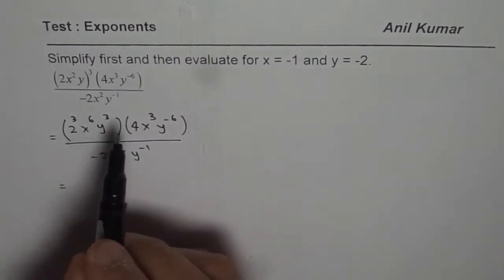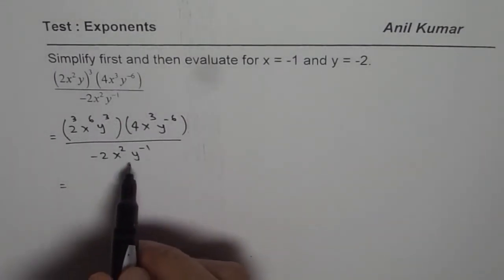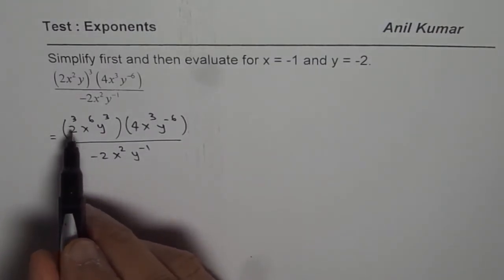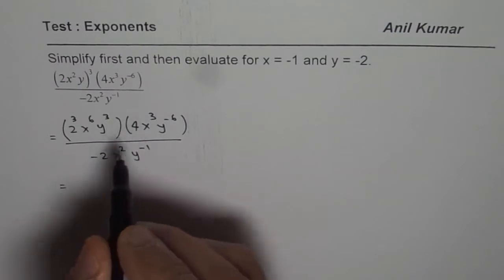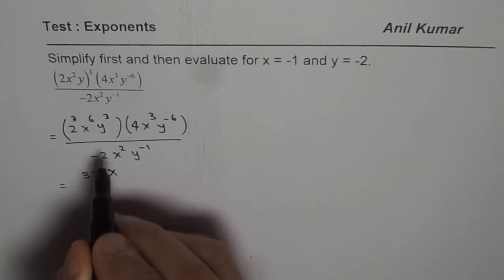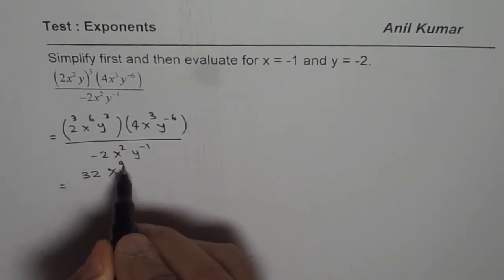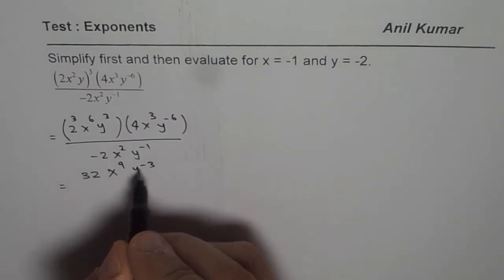Now, we can first take care of the numerator, then we'll take care of the denominator. So 2 cubed is 8, 8 times 4 is 32. x to the power of 6 plus 3 is 9. y to the power of 3 minus 6 gives us minus 3.